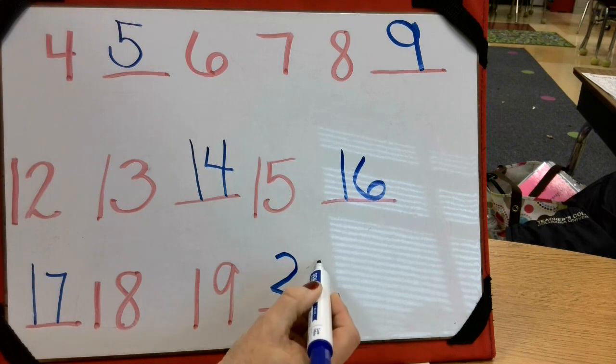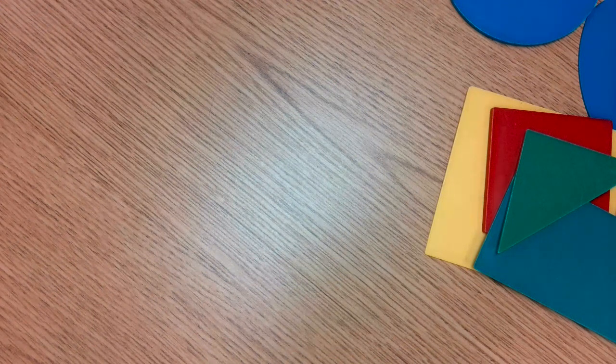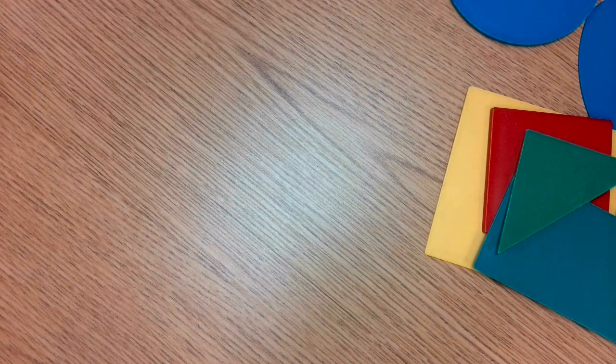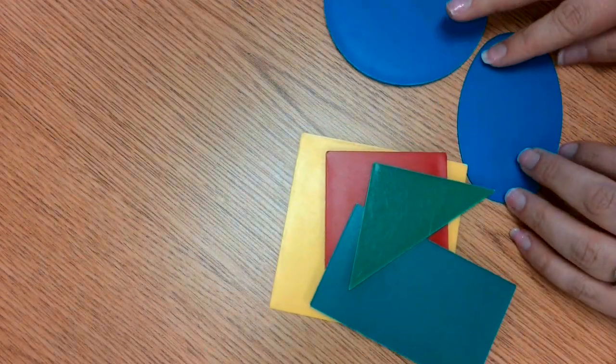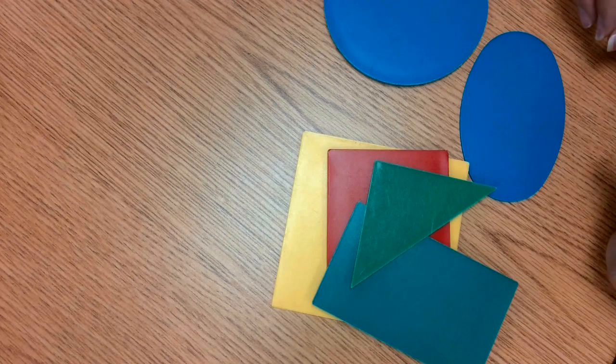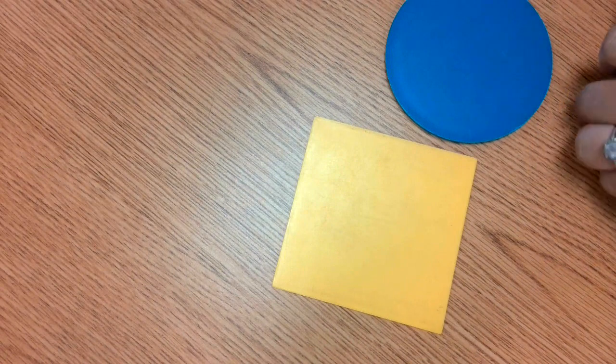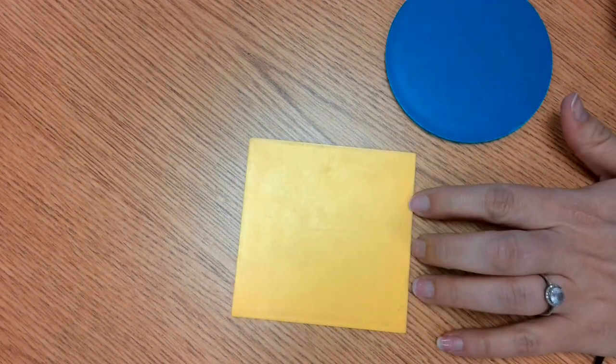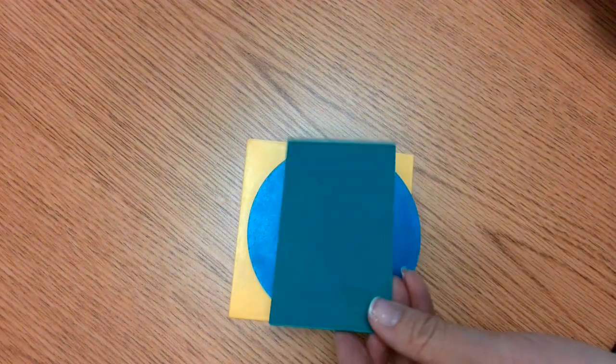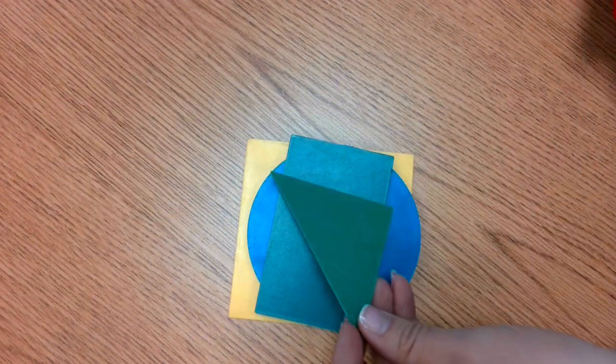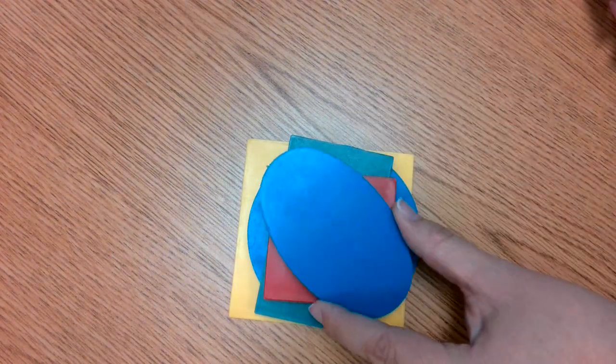Alright, so we are going to compare and contrast two 2D shapes. Now compare and contrast means that we're going to tell how they're alike or how they're different. So first let's make sure we know what all of these 2D shapes are called. First we have a square, then we have a circle, then we have a rectangle, a triangle, another square, and an oval.